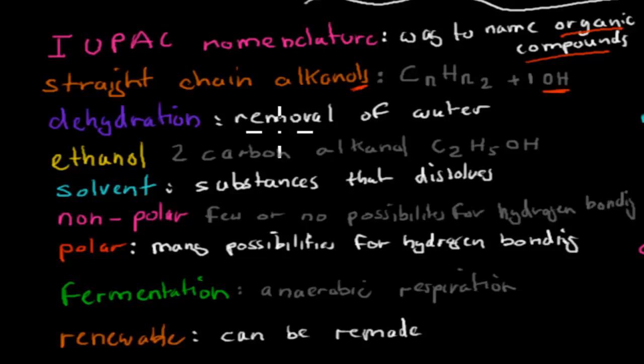Dehydration was the removal of water. Ethanol was a 2-carbon alkanol, so that 2-carbon chain was an alkanol. And its formula was C2H5OH, and then OH makes an alkanol.